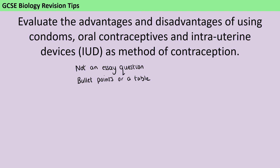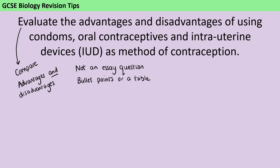All of the 6-mark evaluate questions for GCSE science share one common mark scheme. So we know that you need to be comparing the different things listed in the question, and that means giving advantages and disadvantages of every single one. And then it's crucial that at the end you write a conclusion. To get into level 3 you need a strongly justified conclusion. In other words, if you don't pick one of these to be your favourite and say why, you can't get more than 4 marks.